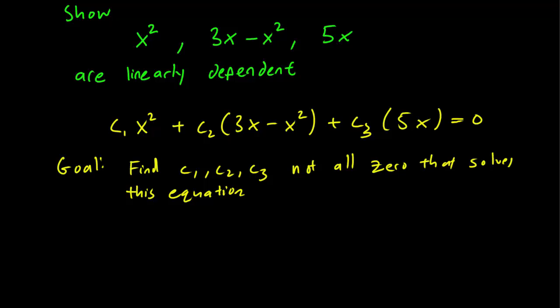So we have c1 x squared plus minus c2 x squared. And we also have 3 c2 x plus 5 c3 x.